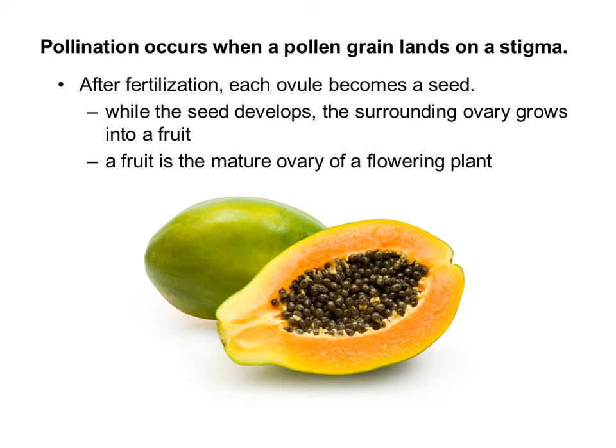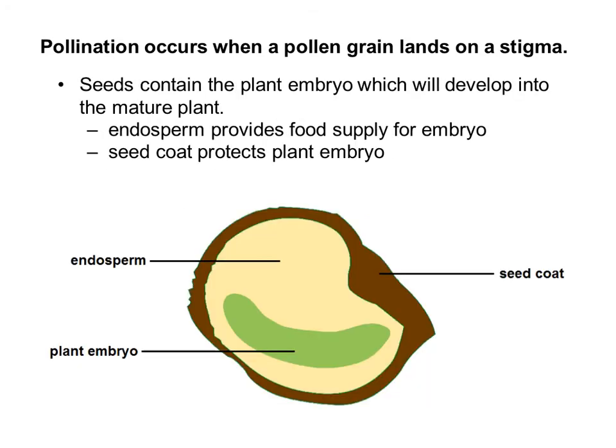In fact, there are some seeds that won't germinate until they've gone through the digestive tract of an animal, which is pretty interesting. Seeds contain the plant embryo, which will develop into the mature plant, along with a section called the endosperm. The endosperm provides a food supply for the embryo, and the seed coat protects the whole plant embryo.